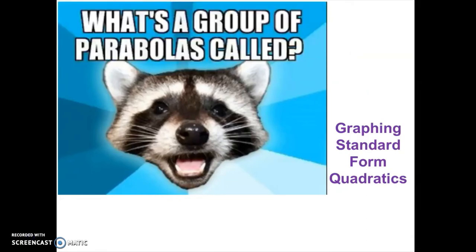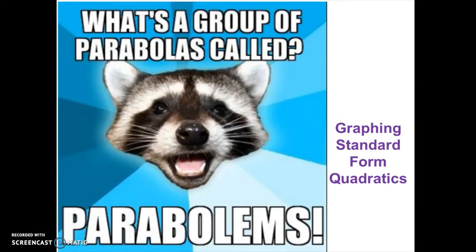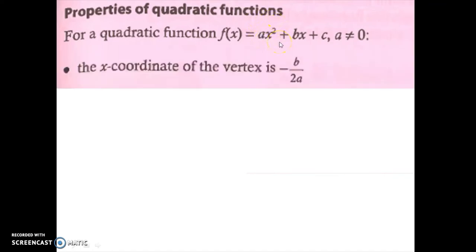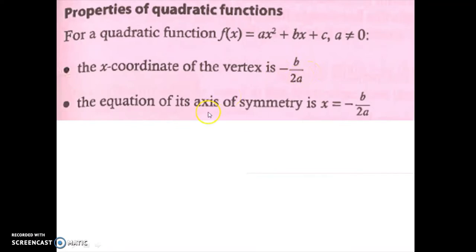Graphing standard form quadratics. Here are some properties of quadratic functions you should have discovered in the last activity. For a quadratic function in standard form, a cannot be zero — because if a were zero, there would be no x-squared term and it would no longer be a quadratic. One property: the x-coordinate of the vertex is negative b over 2a, and the equation of the axis of symmetry is x equals negative b over 2a, passing through the vertex.